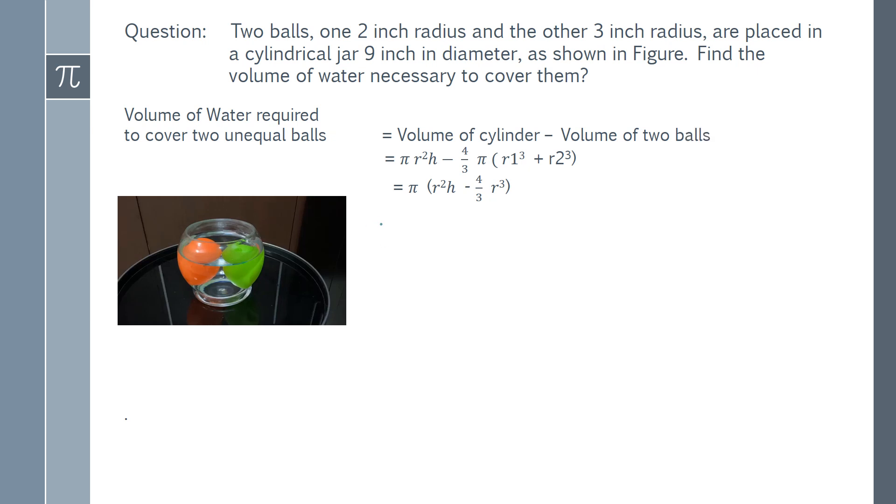Volume of cylinder pi r square h, volume of sphere 4 by 3 pi r cube. Take the pi common outside and the radius of the cylinder is 9 by 2. So, 9 by 2 into 9 by 2. And the height we found it as 8 inches. So, into 8.